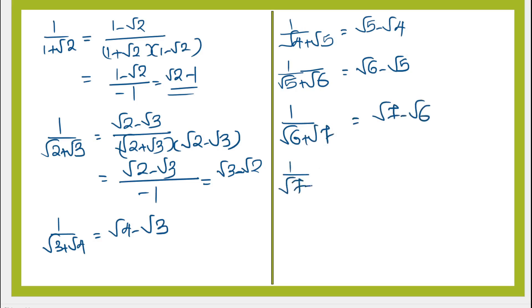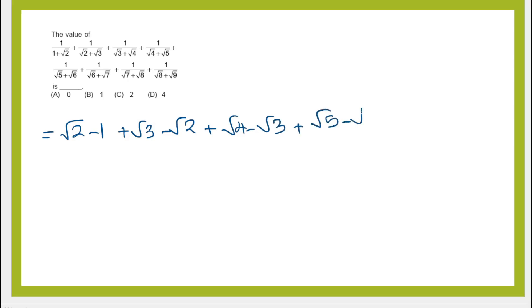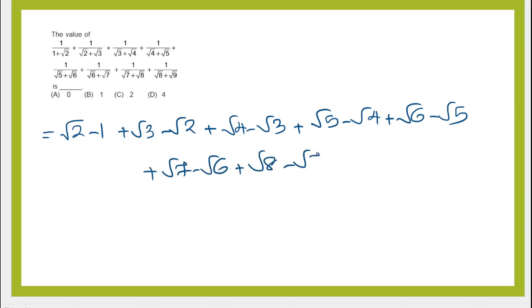1 by root 7 plus root 8 is root 8 minus root 7. Now let us simplify the whole expression: root 2 minus 1 plus root 3 minus root 2 plus root 4 minus root 3 plus root 5 minus root 4 plus root 6 minus root 5 plus root 7 minus root 6 plus root 8 minus root 7 plus root 9 minus root 8. After cancellation we get root 9 minus 1, that is 3 minus 1, equal to 2.